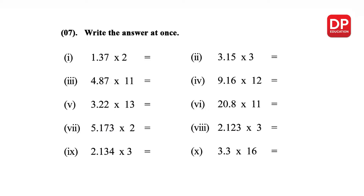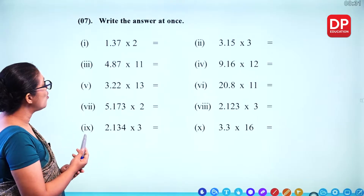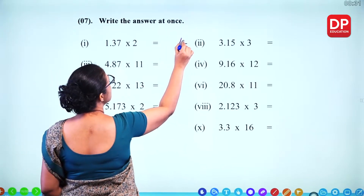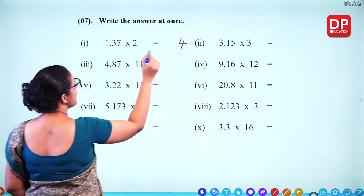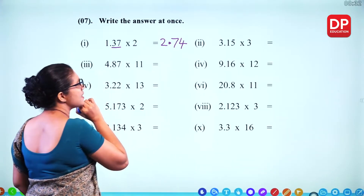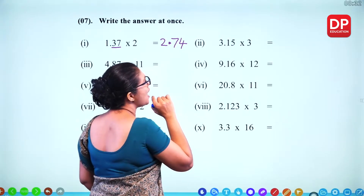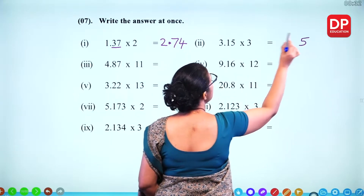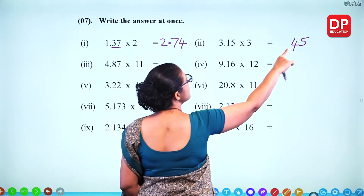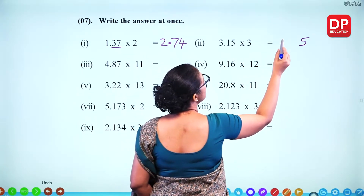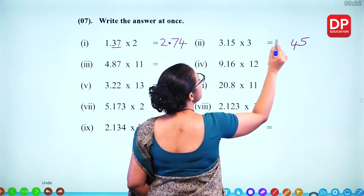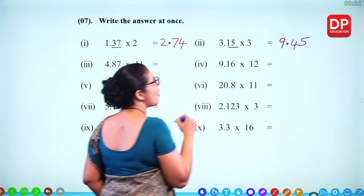Write the answer at once for these decimals multiplied by a whole number. For 1.37 times 2: 137 times 2 — 2 times 7 is 14 (1 remaining), 2 times 3 is 6 plus 1 is 7, 2 times 1 is 2 — giving 274. With 2 decimal places, the answer is 2.74. For 3.15 times 3: 315 times 3 — 3 times 5 is 15 (1 remaining), 3 times 1 plus 1 is 4, 3 times 3 is 9 — giving 945. With 2 decimal places, the answer is 9.45.